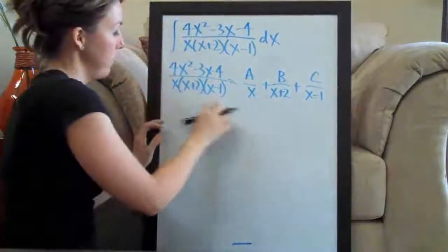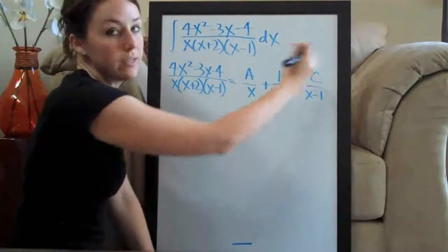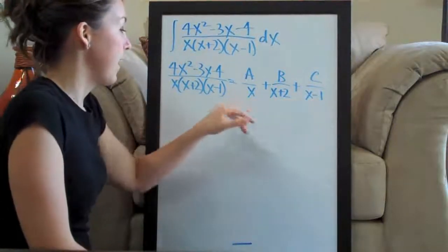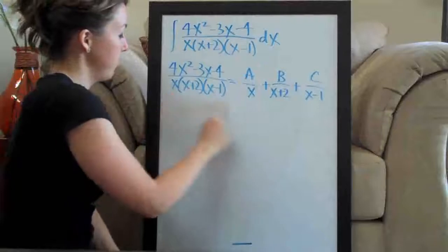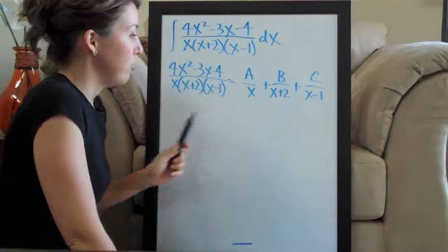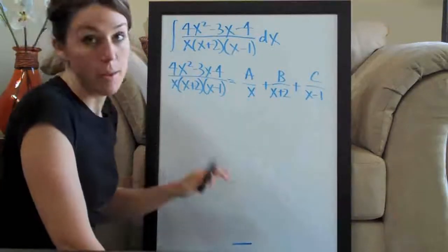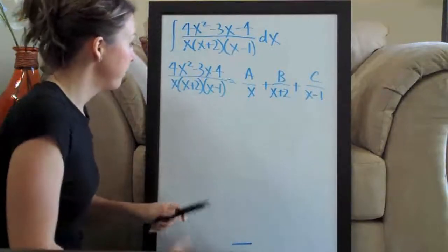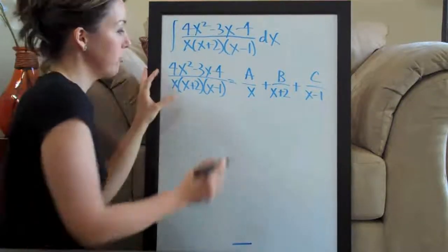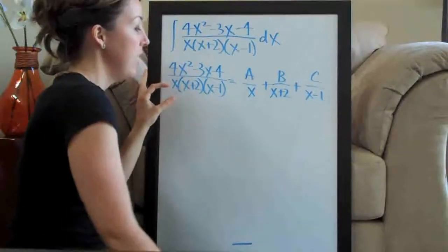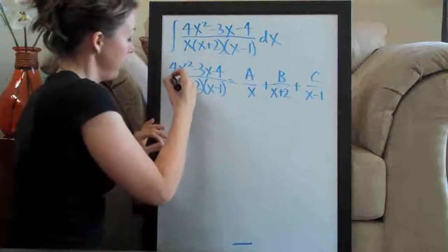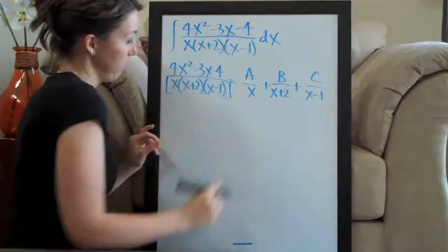If you had more factors on the bottom, you could keep going: D, E, F — but A, B, and C, you just put one over each factor in the denominator. The letters don't matter as long as you solve for them correctly later. This is your first step. Then you multiply every single term in this equation by the whole denominator: x times (x plus 2) times (x minus 1).